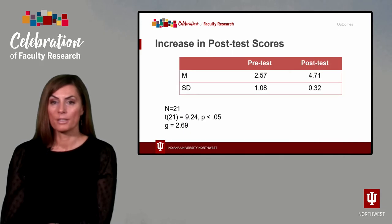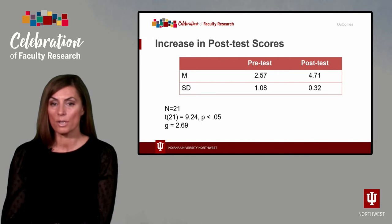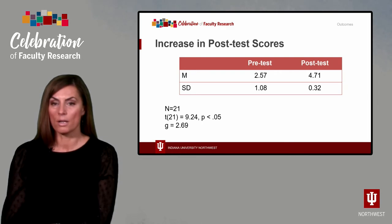And lastly, to determine the effectiveness of this learning activity, a paired sample t-test was conducted. Students' average scores on the pre-test were 2.57 with a standard deviation of 1.08, and the mean score on the post-test was 4.71 with a standard deviation of 0.32. The results showed a statistically significant difference between pre-test and post-test, suggesting that this instructional activity improved overall learning with a t-value of 9.24. Effect size estimate, expressed as Hedges' G, was large at 2.69. Therefore, we can conclude that students learn better after being asked to describe X-ray interactions through acting and creative writing activities.